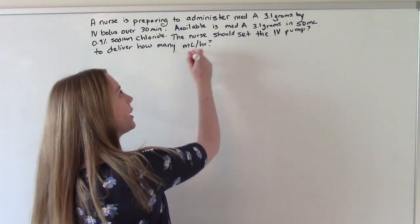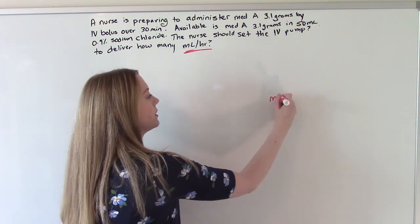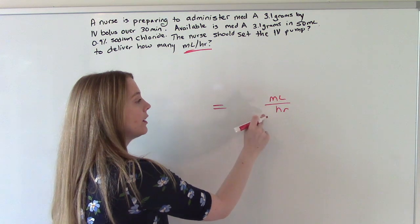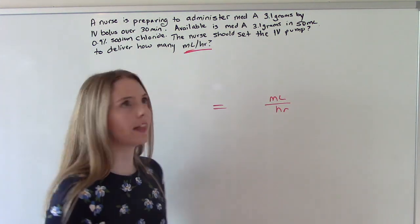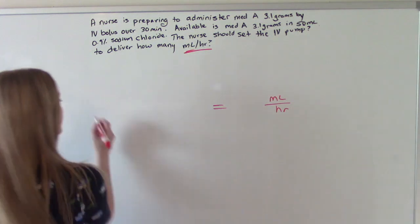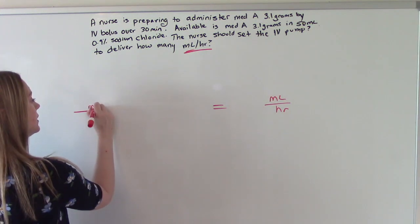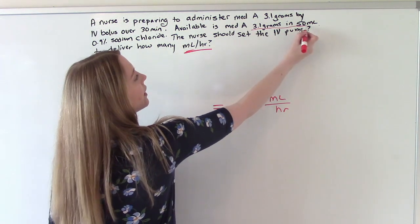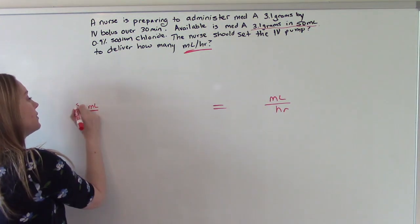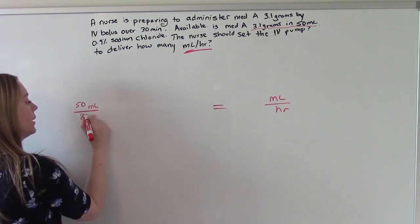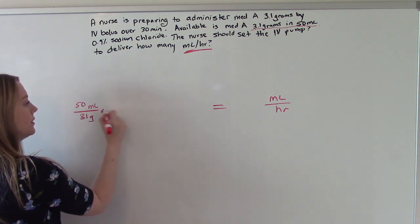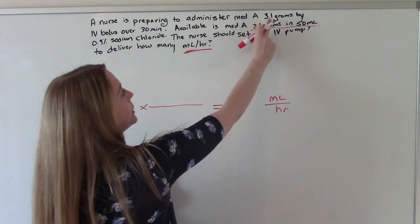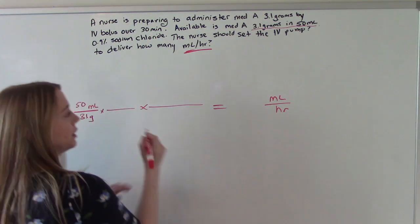So what are we looking for in our answer? mLs per hour. So we're going to have mLs in our numerator and hour in our denominator. So we need to find that in our equation. So the first part, let's put mLs in our numerator. And where do we find that? Here. So 50 mLs, 3.1 grams. What else do we know? We know that there is 3.1 grams over 30 minutes.